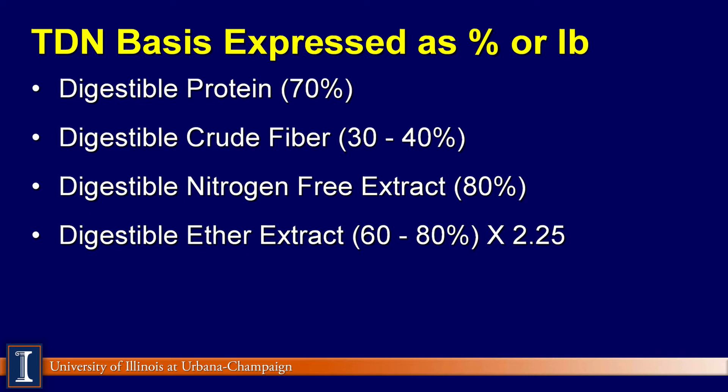TDN is calculated by summing up the percent or the amount of digestible protein. A good protein figure is that about 70% of the protein should be digestible, which means the other 30% comes out in fecal and urine losses. Then we add digestible crude fiber, which is a very low number because of the digestibility of some of the non-digestible lignin fractions — about 30% to 40%.